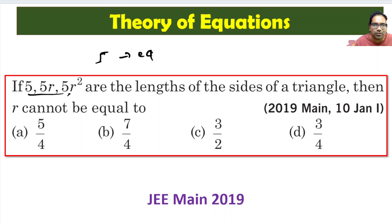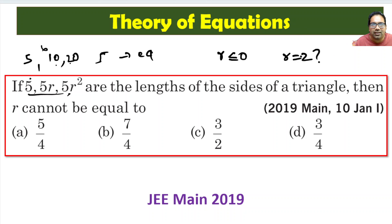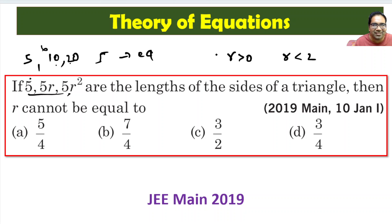Can r be equal to 0? No — because the sides 5r and 5r² would be 0. Can r be negative? No, because we cannot have a side whose length is negative. So r clearly cannot be less than or equal to 0. And if r = 2, the sides would be 5, 10, 20, which is not a valid triangle. So r must be less than 2.